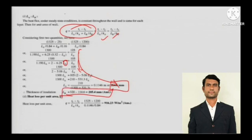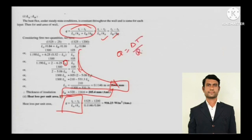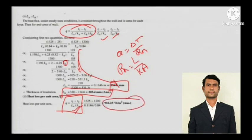For heat loss per unit area, you can take either the fire brick or the insulation part and apply Fourier's law in the form Q equals delta T divided by R_th, where R_th for conduction is L over KA. So here it is L over KA.